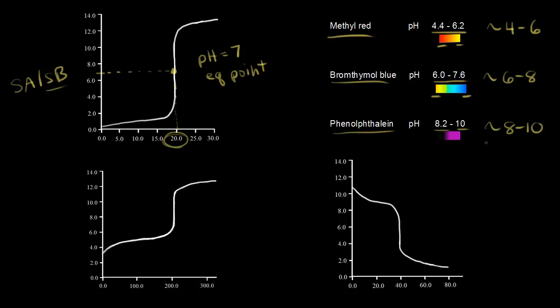Let's think about which acid-base indicator we could use for this titration. You want to choose an indicator that changes color in a range close to your equivalence point. Bromothymol blue changes color from pH 6 to 8 — at a pH of 6 it's yellow, and then it changes to blue (you might even see some green). So bromothymol blue would be a good indicator — when the blue color persists, you've reached the endpoint, which is a good approximation of the equivalence point.